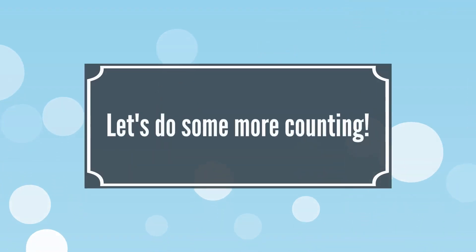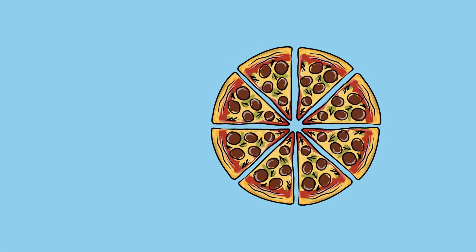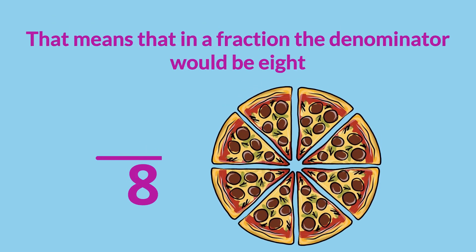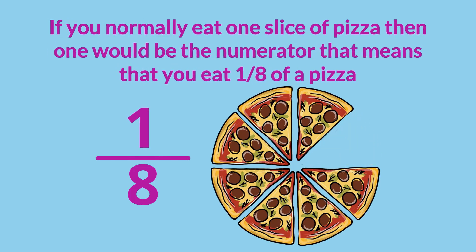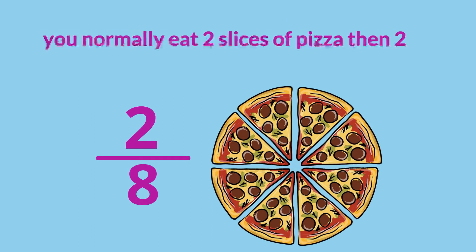Let's do some more counting. Pizza is usually divided into 8 slices. That means that in a fraction, the denominator would be 8. If you normally eat 1 slice of pizza, then 1 would be the numerator and that means that you eat 1 eighth of a pizza.